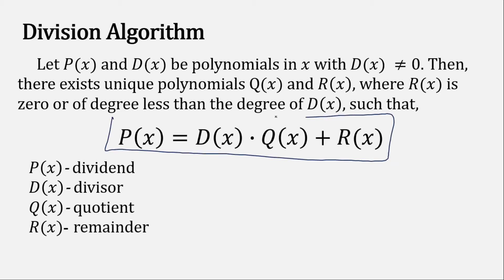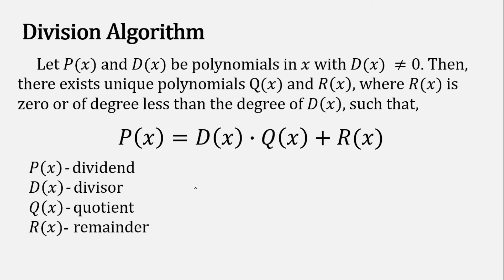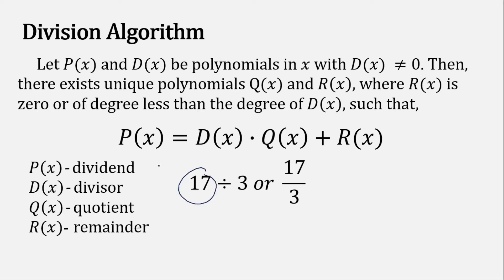If you find it hard to understand what it says, I will explain it with this example. Imagine 17 divided by 3, or in fraction form, 17 over 3. So 17 here is the dividend — that is p of x — and 3 is the divisor — that is d of x.